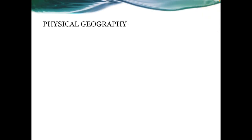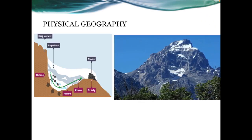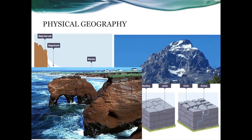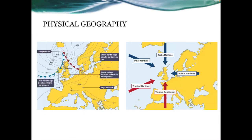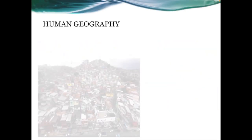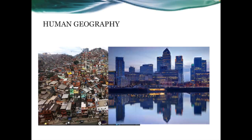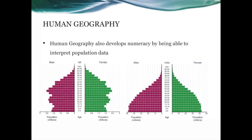Geography is unique in that it's classed as both a science and an arts subject at university and college. Physical geography is the study of the world around us. Three examples of areas that are studied are the formation of upland glaciated areas, the formation of limestone features and the formation of coastal features. The numeracy part of physical geography is developed by the study of weather in the UK. Pupils will be expected to interpret weather charts like the one shown on the left.